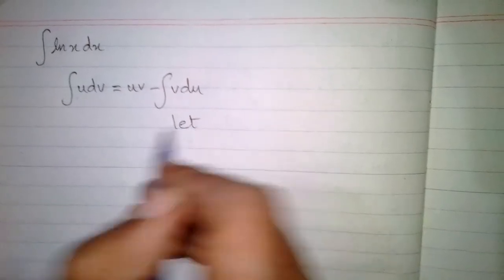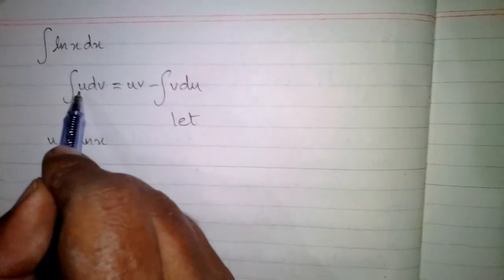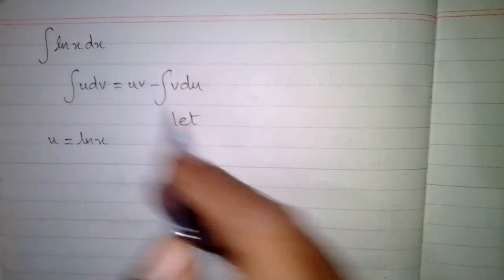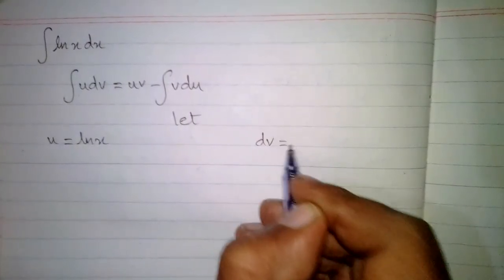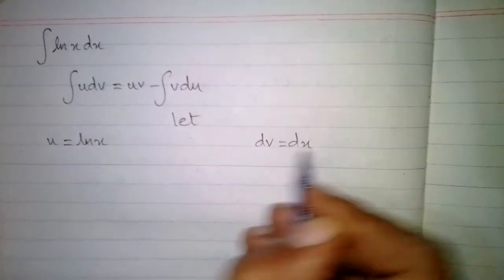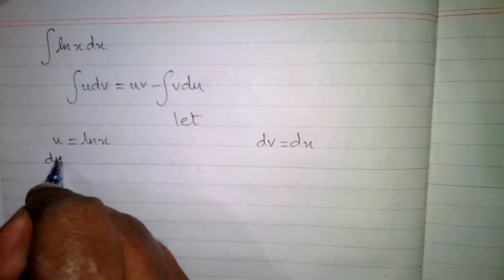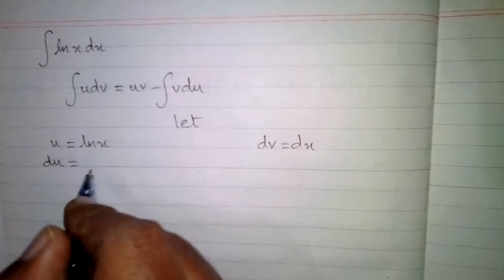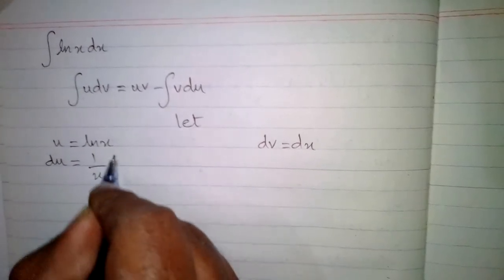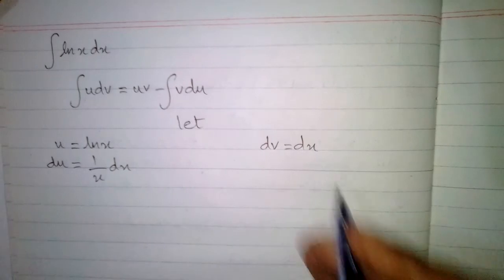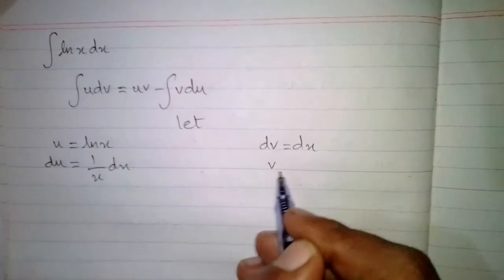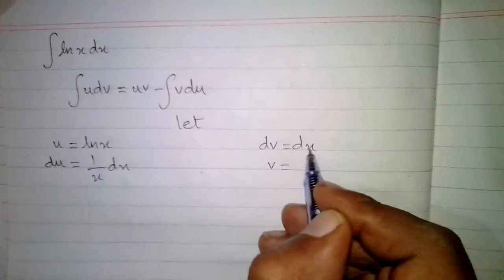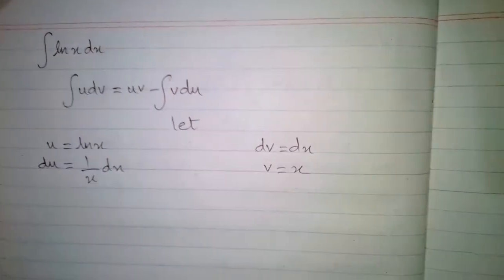We suppose that u is equal to ln x and dv is dx. The differential du is equal to the derivative of ln x, which is 1 over x times dx, and the integral of dv is v, where the integral of dx is x.